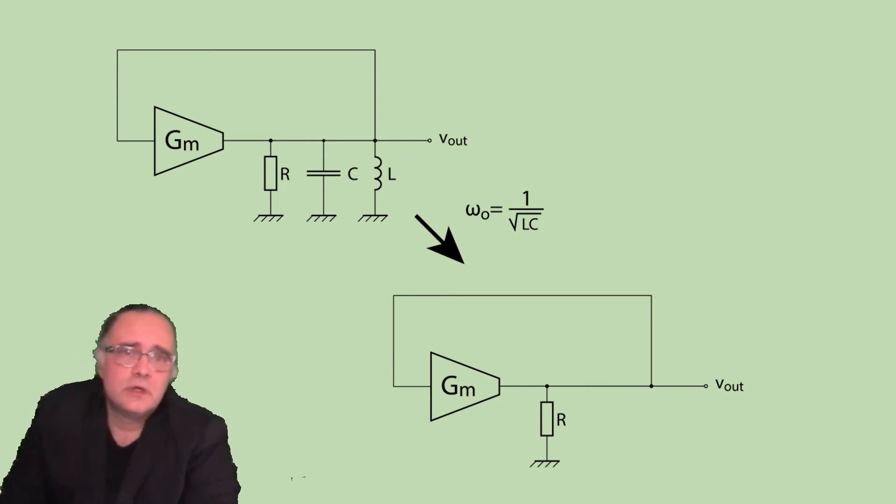Then we will transform the circuit to something real like what is shown here. Now if for this frequency, this particular frequency, we choose the GM level wisely we can guarantee that the circuit will oscillate 1 over R.